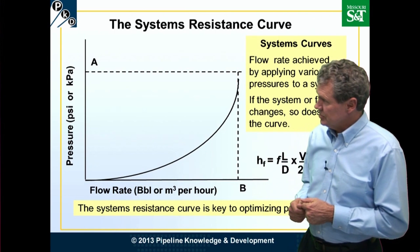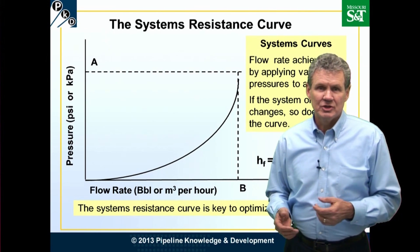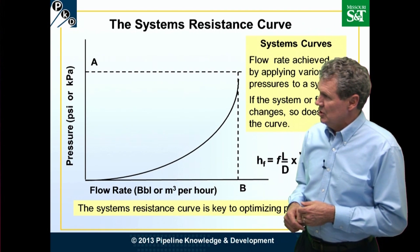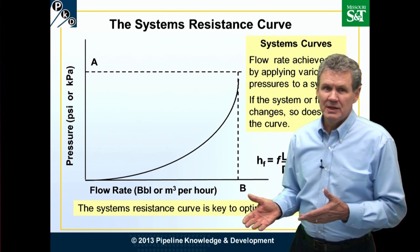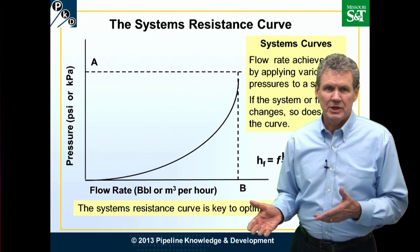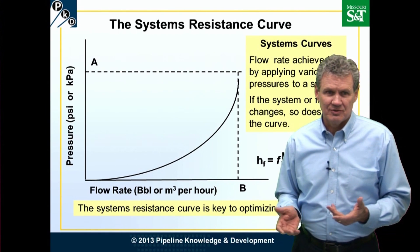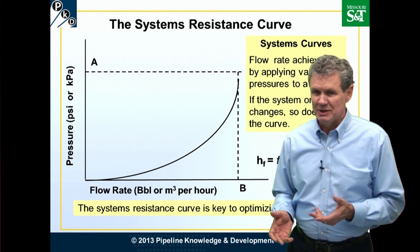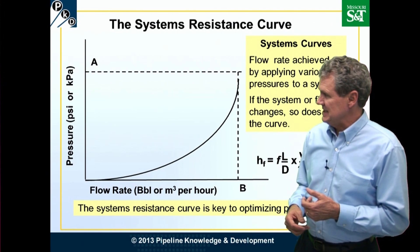This first one is a systems resistance curve. On the left-hand side we have the vertical axis, which can be expressed in psi, kilopascals, meters, or feet — expressions of pressure. On the bottom, the horizontal axis is the flow rate in barrels per hour, cubic meters per hour, or cubic feet per hour, as the case may be.